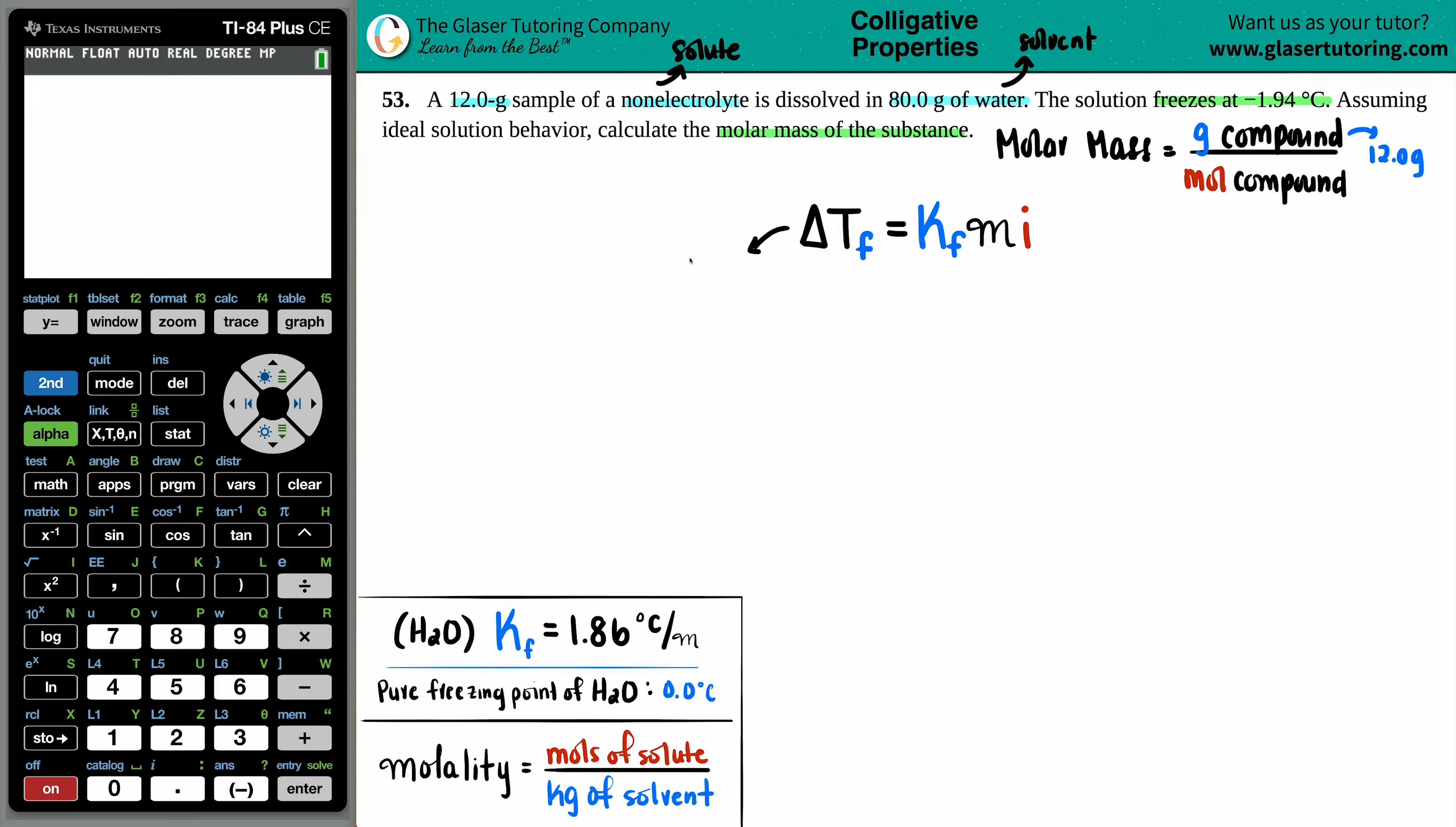Delta Tf equals Kf times M times I. So let's just unpack all this. We have this triangle Tf. That's delta. And the triangle just means the change. So we have a change in a freezing point because we're dealing with freezing. So we have a change in the freezing point equals the freezing point depression constant value. And just know that this Kf value is solely reliant on the solvent. Now, in this case, we already stated that the water, H2O, was the solvent. So I had to go in the textbook to find out what that Kf value was. We can't do this question without knowing that Kf value. So they probably assumed that you were going to go find that number. But maybe on a test or quiz, they would give you that number. So this is 1.86 degrees Celsius per molality.